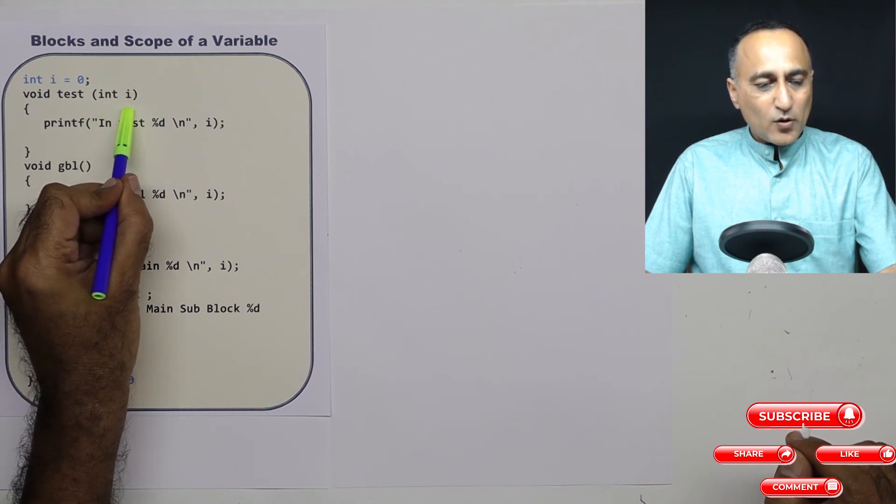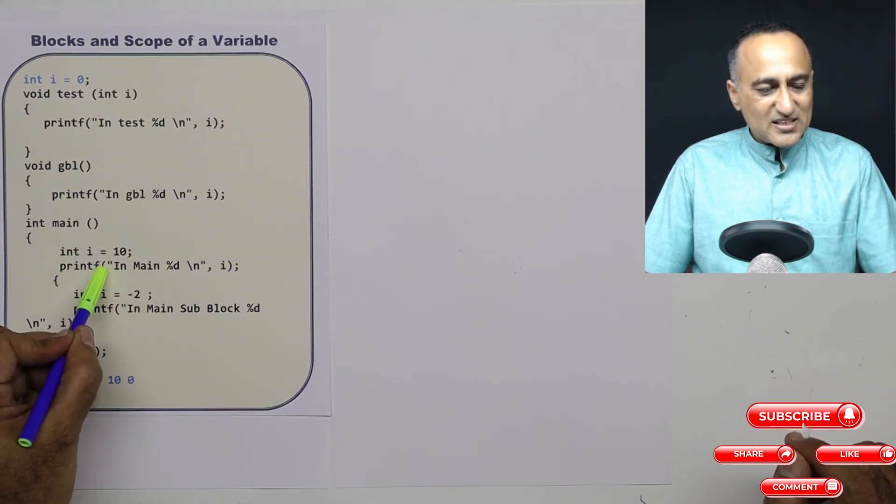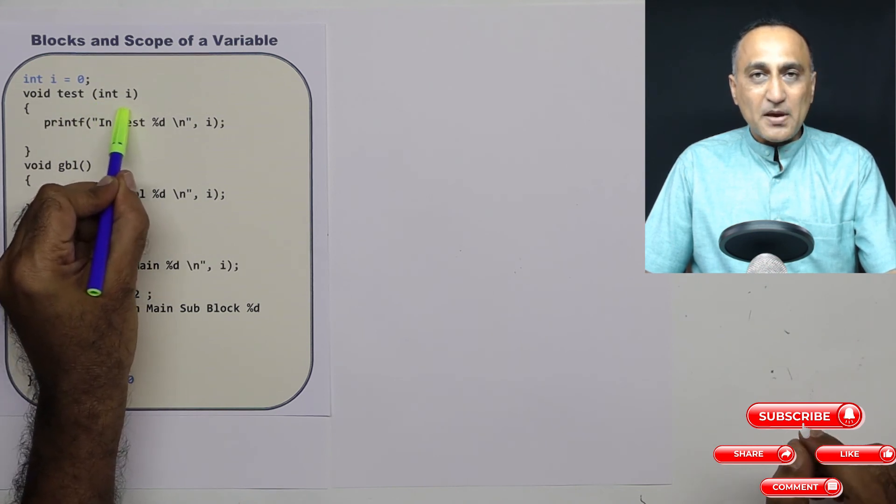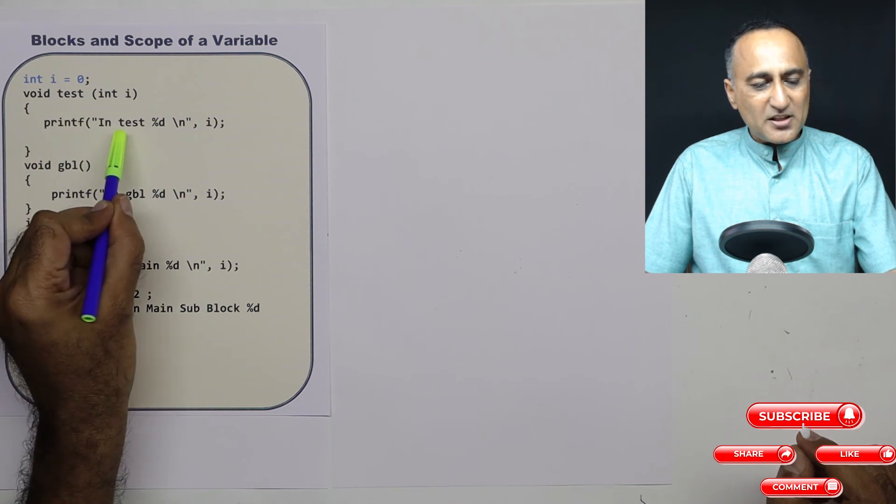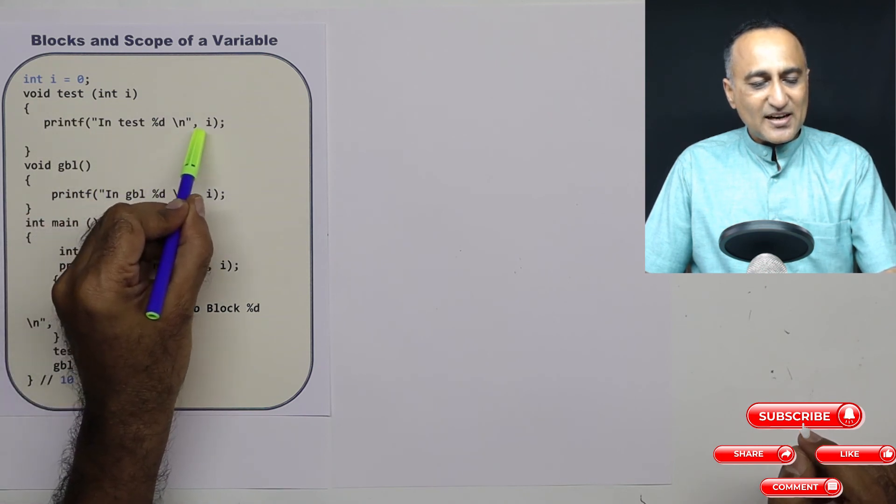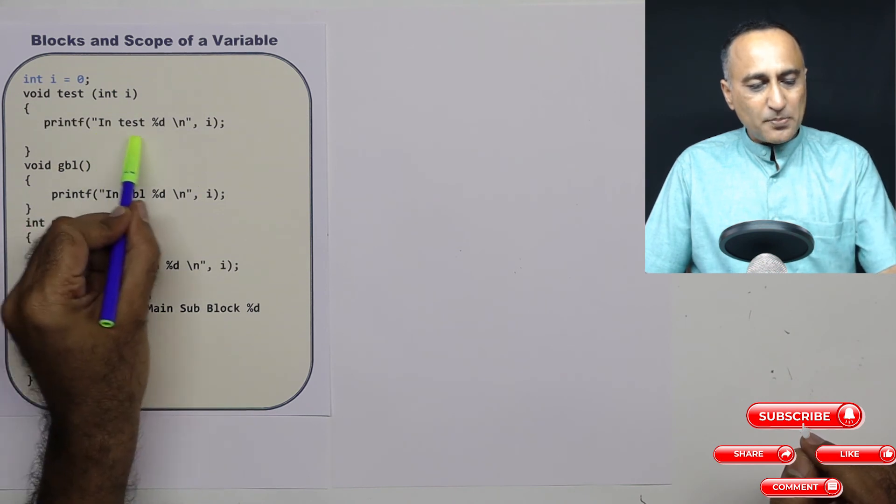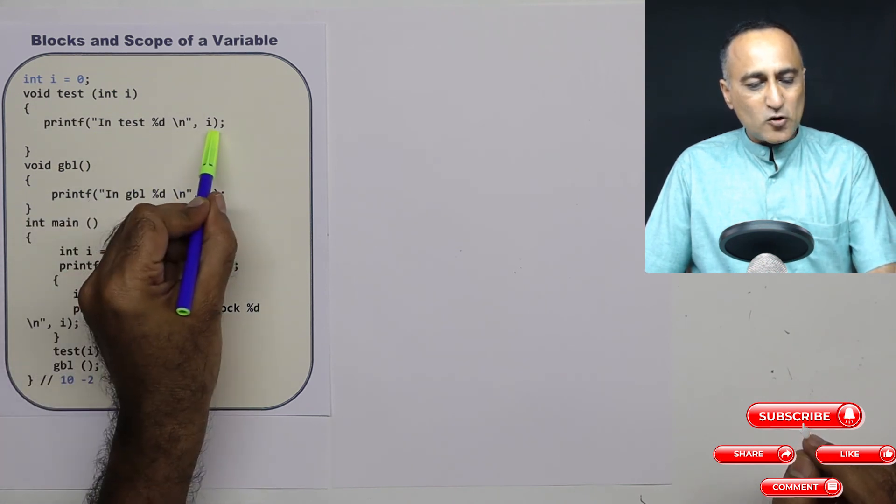This int i is neither this nor this. It is a different memory location. Now what I am doing is when I print the value of test and the value of i, the value of i which happened to be 10 is going to be printed in test. In test, it is going to print 10.